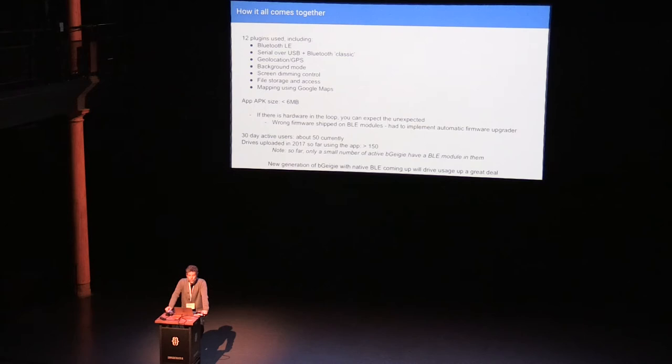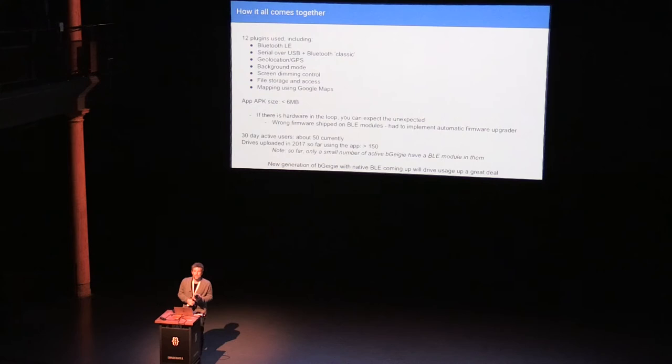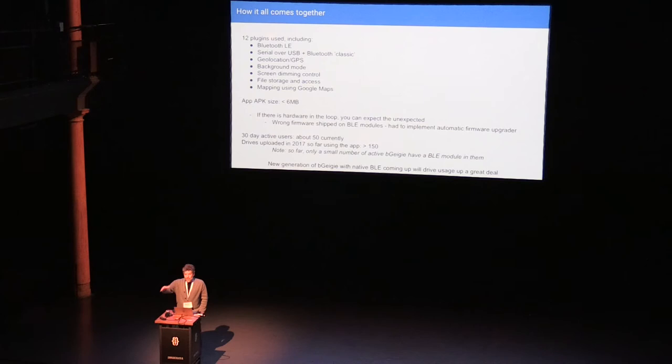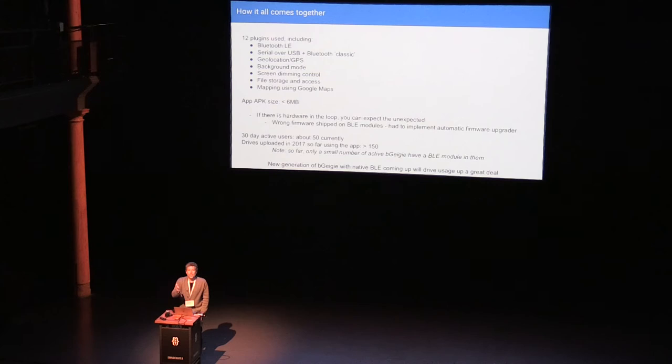Using HTML Google Maps works really well and makes it easy to be accepted on the Amazon App Store too, since you don't need the native Google Maps component with Amazon's weird API requirements. The APK is not too big. Right now we have a minority of Geiger counters with BLE — about 50 people use the app all the time with roughly 1,000 devices in the field, with quite a few drives uploaded in 2017.